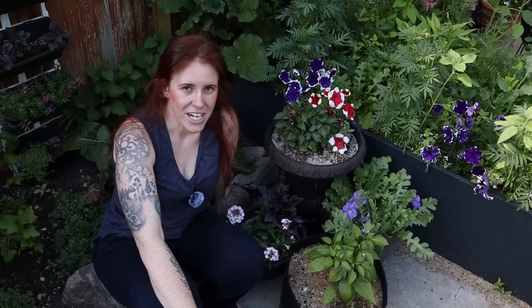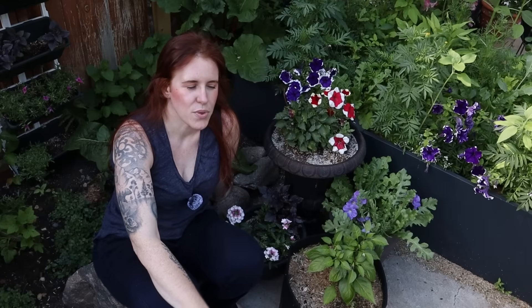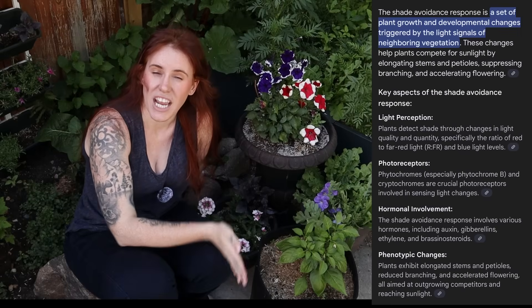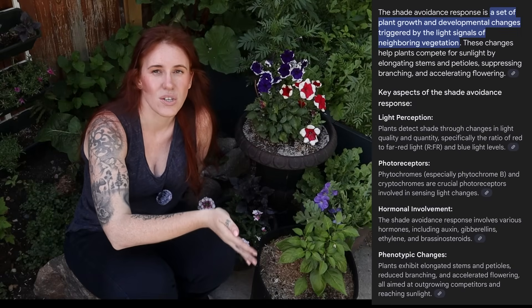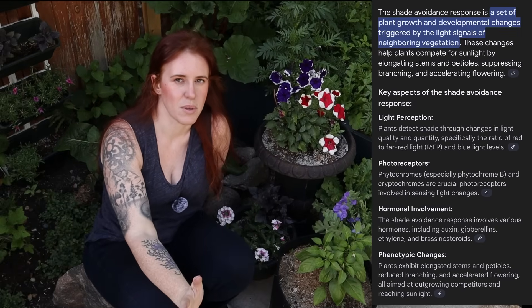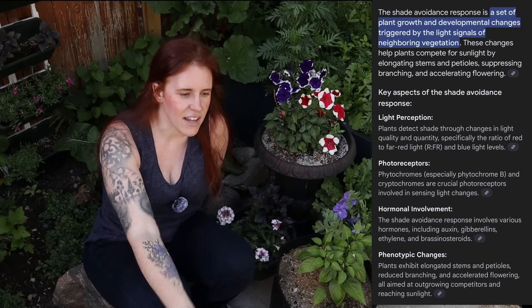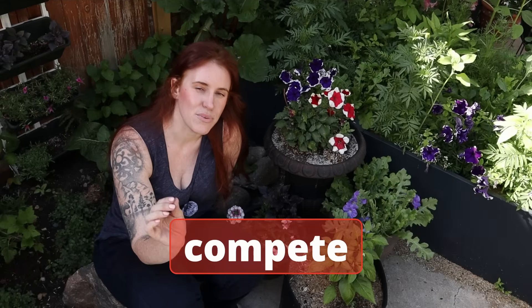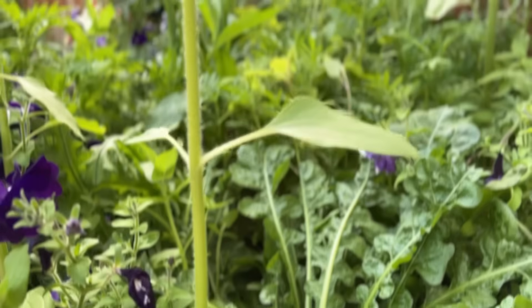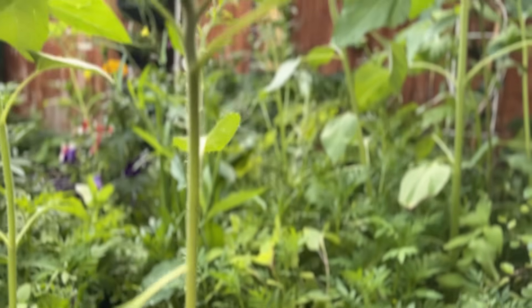This change in ratio between far red light and red light actually triggers what we call a shade avoidance response. Very simply put, this is a fancy word for plants being told either compete or die. And that means you can cue stem elongation, lagginess, excessive levels of foliage, and absolutely no flowers.